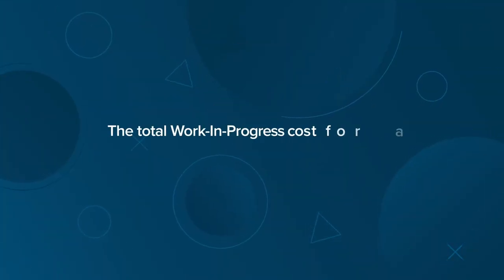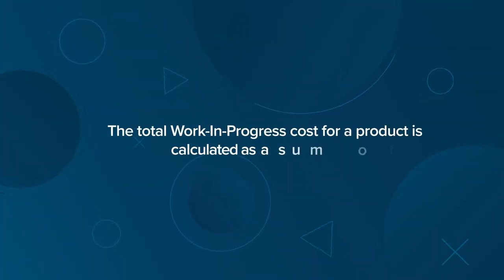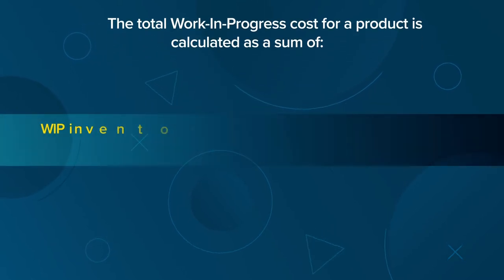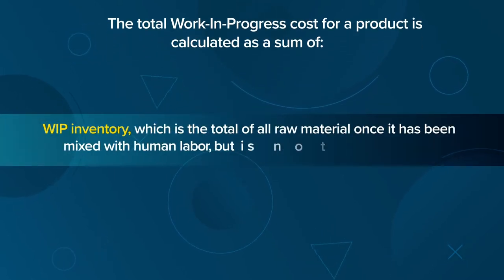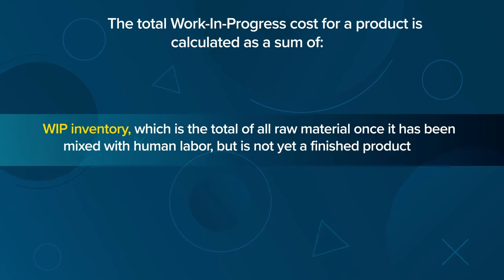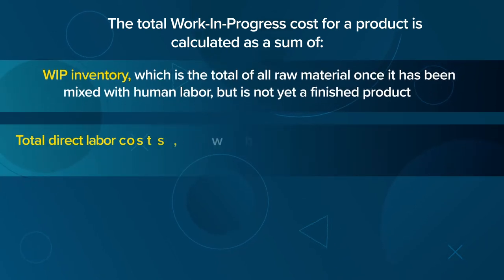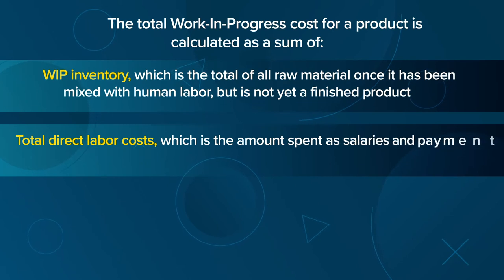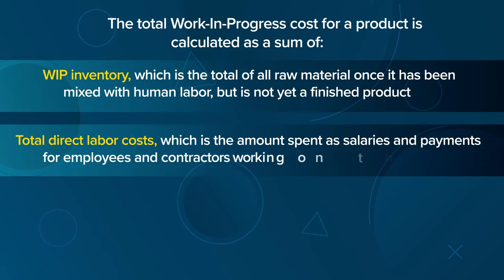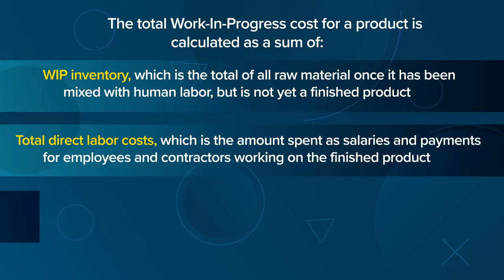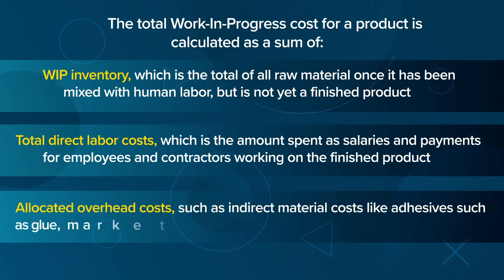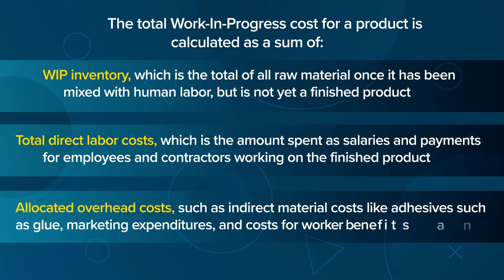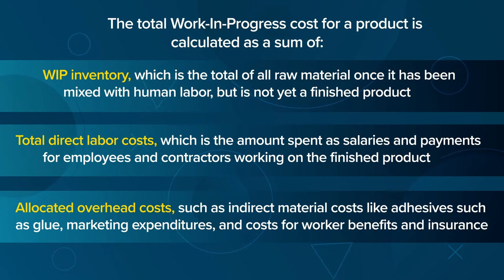The total work in progress cost for a product is calculated as a sum of: WIP inventory, which is the total of all raw material once it has been mixed with human labor but is not yet a finished product; total direct labor costs, which is the amount spent as salaries and payments for employees and contractors working on the finished product; and allocated overhead costs, such as indirect material costs like adhesives such as glue, marketing expenditures, and costs for worker benefits and insurance.